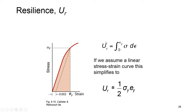The definition of resilience UR is the integral of stress d-epsilon from zero to a certain value of strain. If we assume a linear stress-strain curve, this relation can be simplified to the formula shown here.